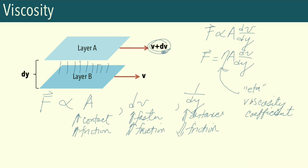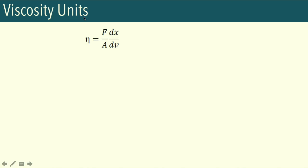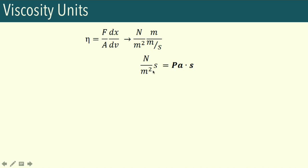The viscosity coefficient eta is characteristic for each type of gas. To find the units of eta, we solve for it: eta equals force divided by area times dx over dV. The units for force are newtons, for area meter squared, for dx meters, and for velocity meters per second. Simplifying gives us newton per meter squared times second. This unit for pressure is the Pascal, so the SI unit for eta is Pascal times second.